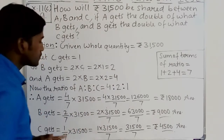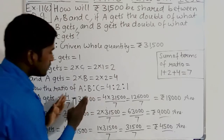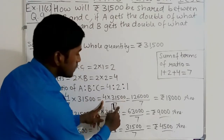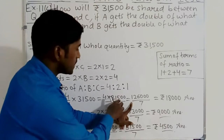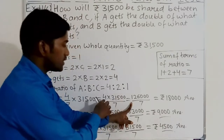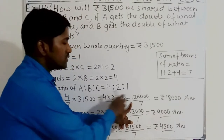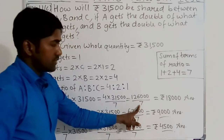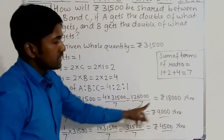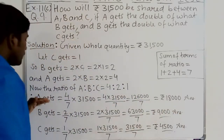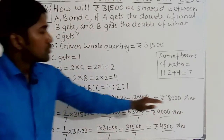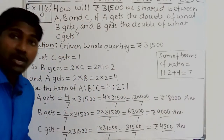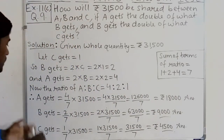Then multiplied by 31,500, the whole quantity. So 4 into 31,500 divided by 7. After multiplying 31,500 by 4, you get 1,26,000, then divided by 7, you get 18,000. So A gets rupees 18,000.